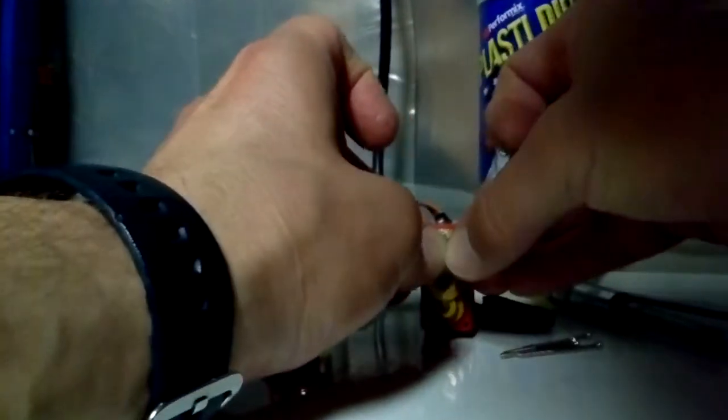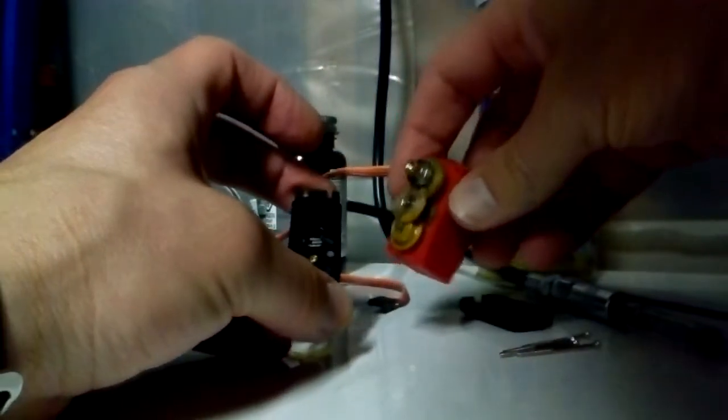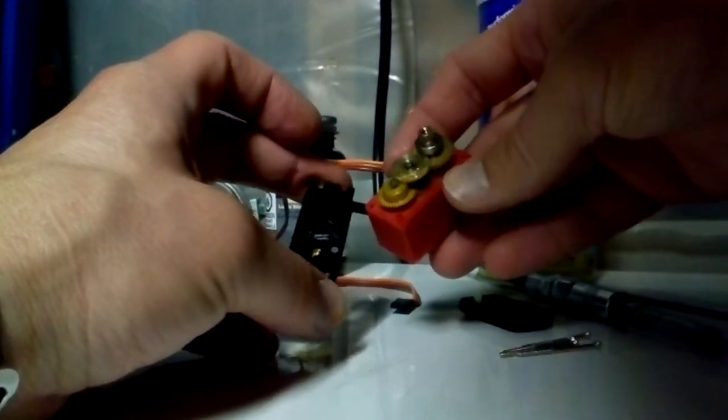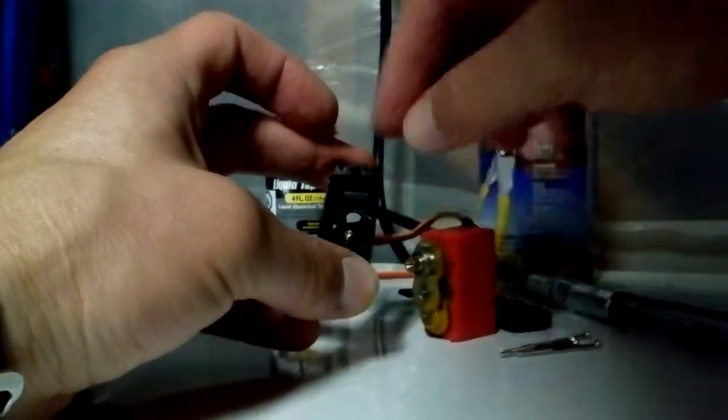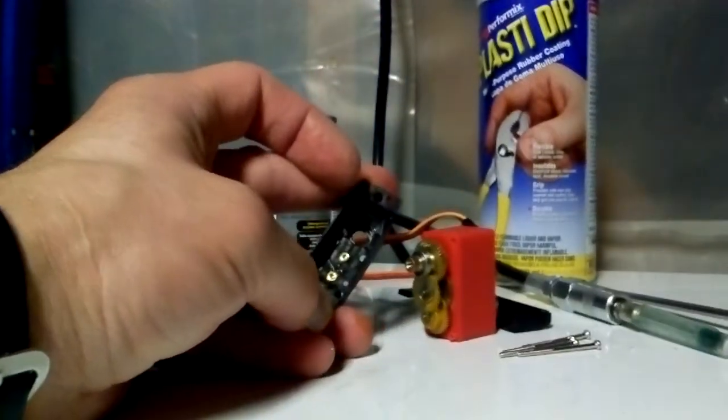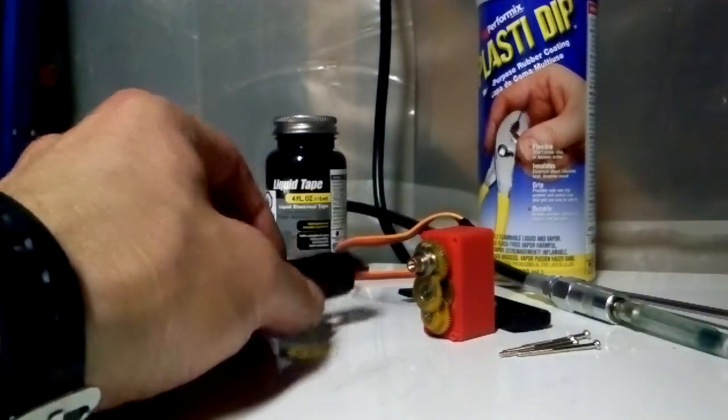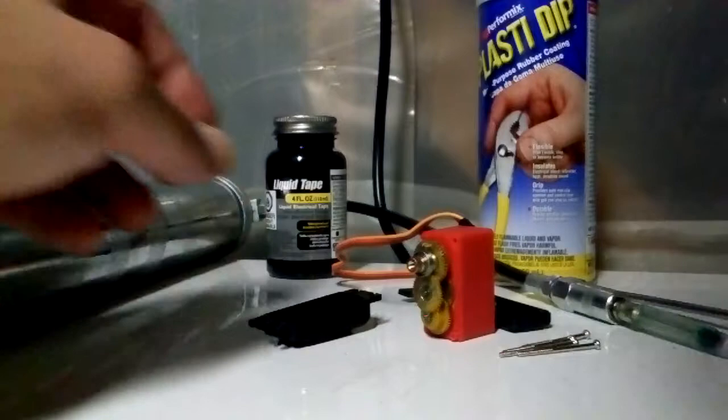We'll remove this bearing here real quick. I guess it's on there, so we'll just leave it on there. We'll pack it full of grease all the way around it and fill the top end here with water-resistant grease to make sure no water gets in. Then we'll seal the back end with liquid tape.